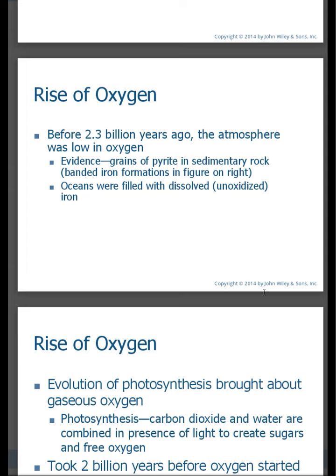But before 2.3 billion years ago, the Earth's atmosphere had very little oxygen. The Earth leaves evidence behind. We see pyrite in sedimentary rock — iron formations in the Earth's rock formations. Basically what that tells us is the oceans were filled with dissolved iron, in other words unoxidized iron. When we talk about oxidization, we're talking about elements reacting with oxygen present. The fact that we have all of this pyrite in sedimentary rock shows us that we had unoxidized iron, Fe, the symbol for that.